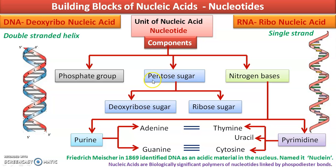First, pentose sugar — it is a five-carbon sugar. Both DNA and RNA have a pentose sugar, meaning the carbon number is five. But there is a slight difference between the two types of sugar, because of which one is called deoxyribose sugar and the other is called ribose sugar. We will see how the difference shows in the structure on the next screen.